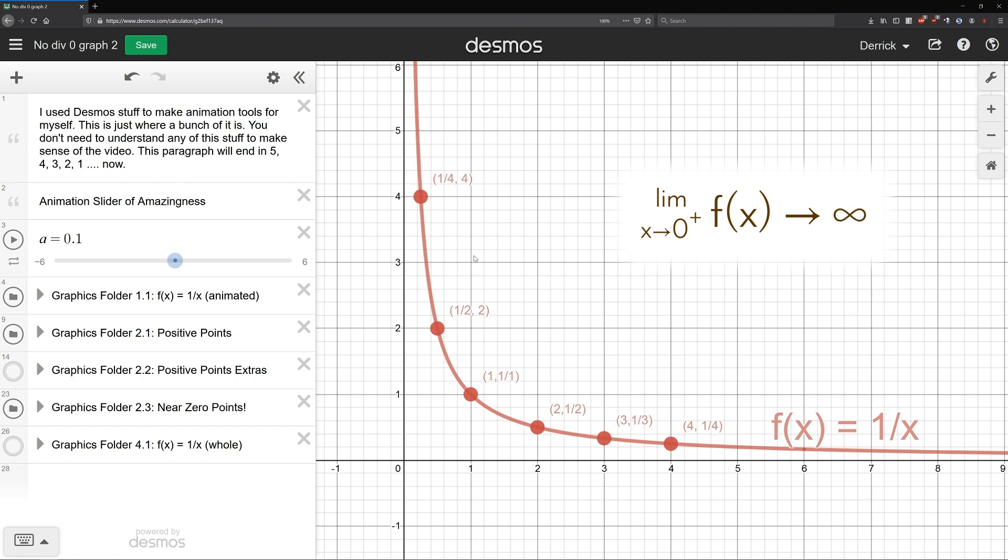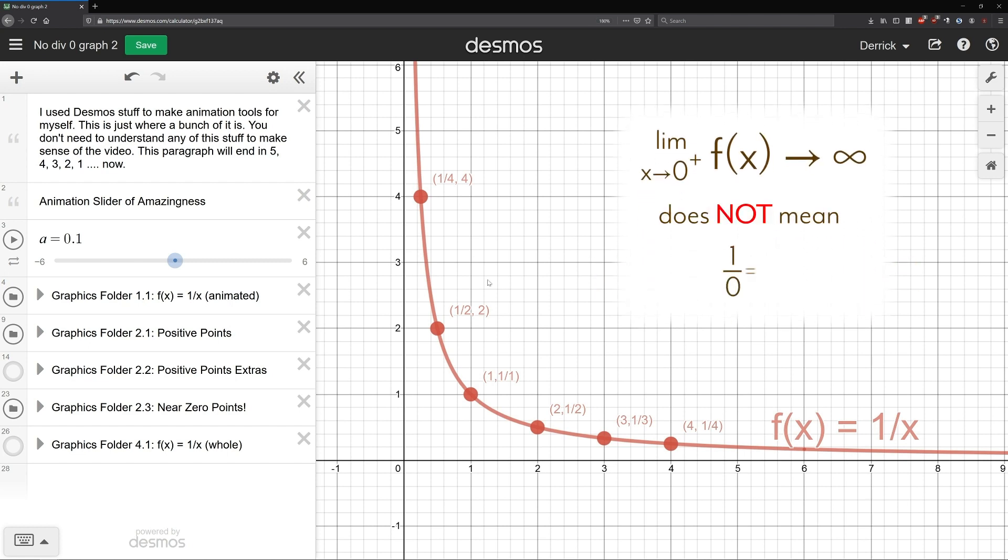But please note that this does not say that one over zero equals infinity. If we try to do that, then what we're saying is that any math we can do with infinity, we can also do with one over zero. And as we saw earlier, just writing down the expression one over zero breaks rules. So we wouldn't be covering over one over zero's problems with infinity solutions, we would be tainting infinity with one over zero's problems.